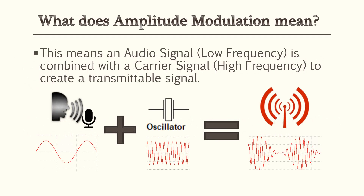Amplitude modulation means taking an audio signal, which is very low frequency, and combining it with a carrier signal which is higher frequency — usually between 540 kilohertz to 1700 kilohertz — to create a transmittable signal. In the illustration, we have a person speaking into a microphone, adding an oscillator for the higher frequency, and when combined properly this creates an AM waveform that can be transmitted over the airwaves.